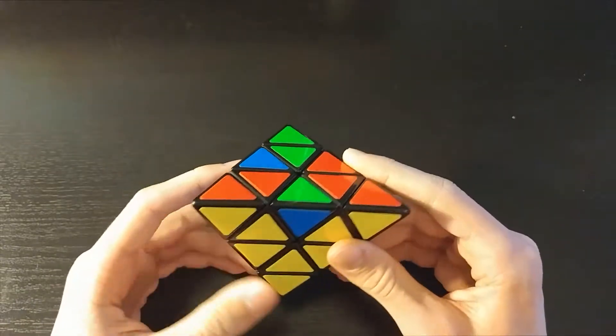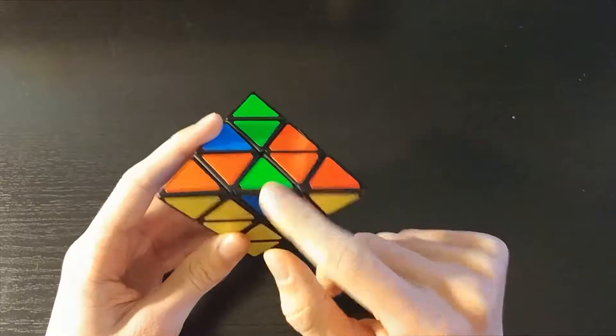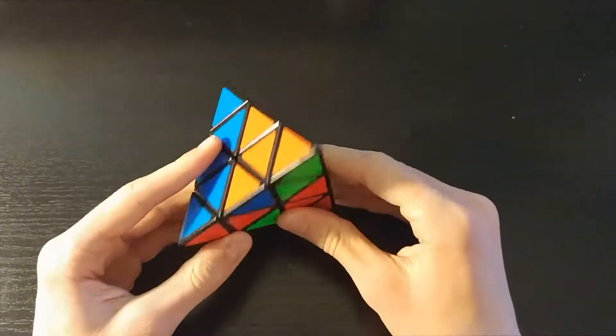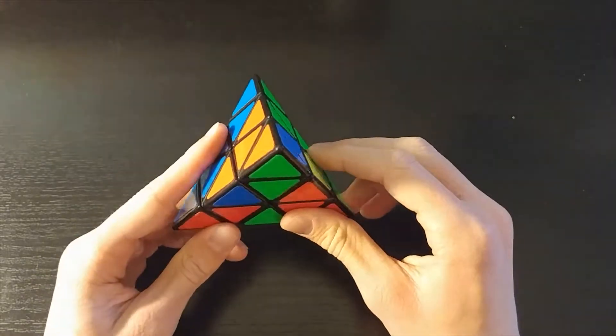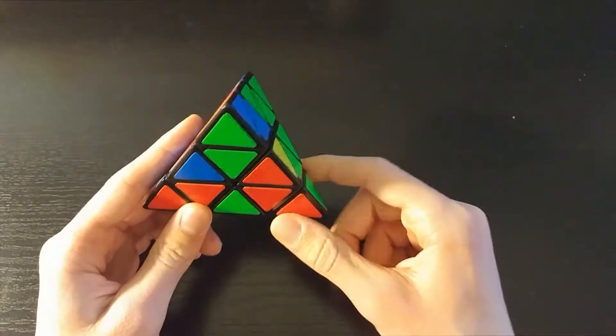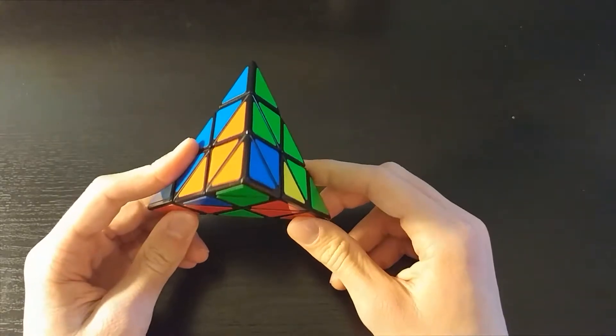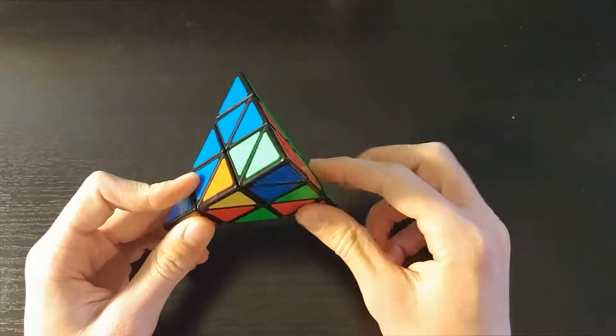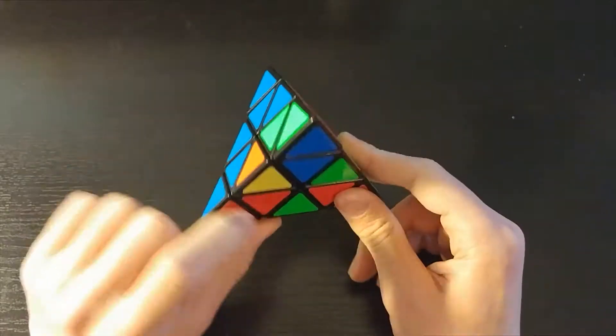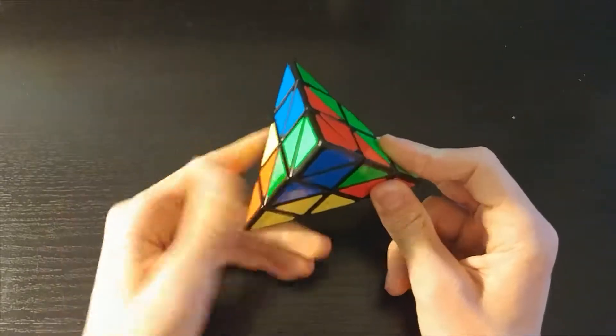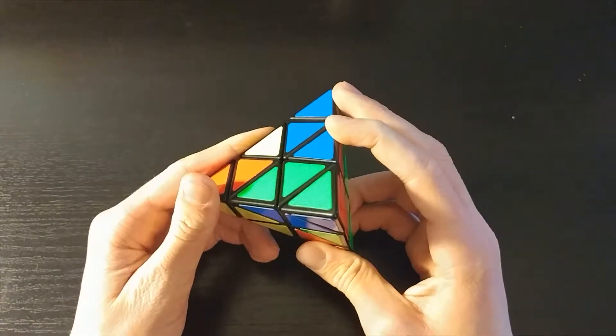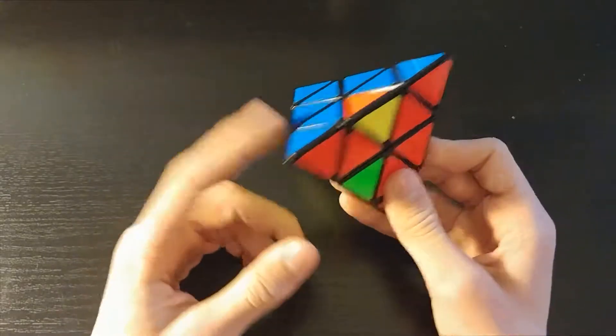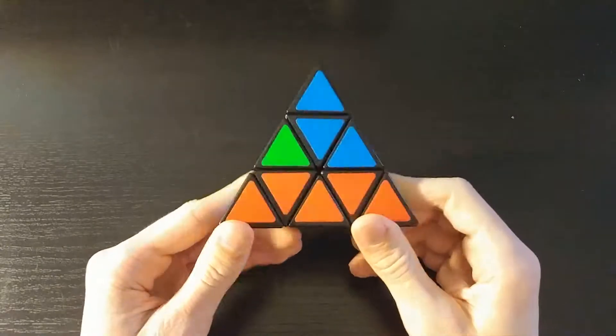The first thing we're going to do in this step is look at what edge is right here in our V. I can see that it's the green blue edge. So on the top, we're going to look for the green blue centers, which are right here. Then what we're going to want to do is line it up so these pieces are not matching. Then you can bring up this piece in the direction of its corresponding center. You're going to move it out of the way and to the back, and then bring this back down so it stays in shape.